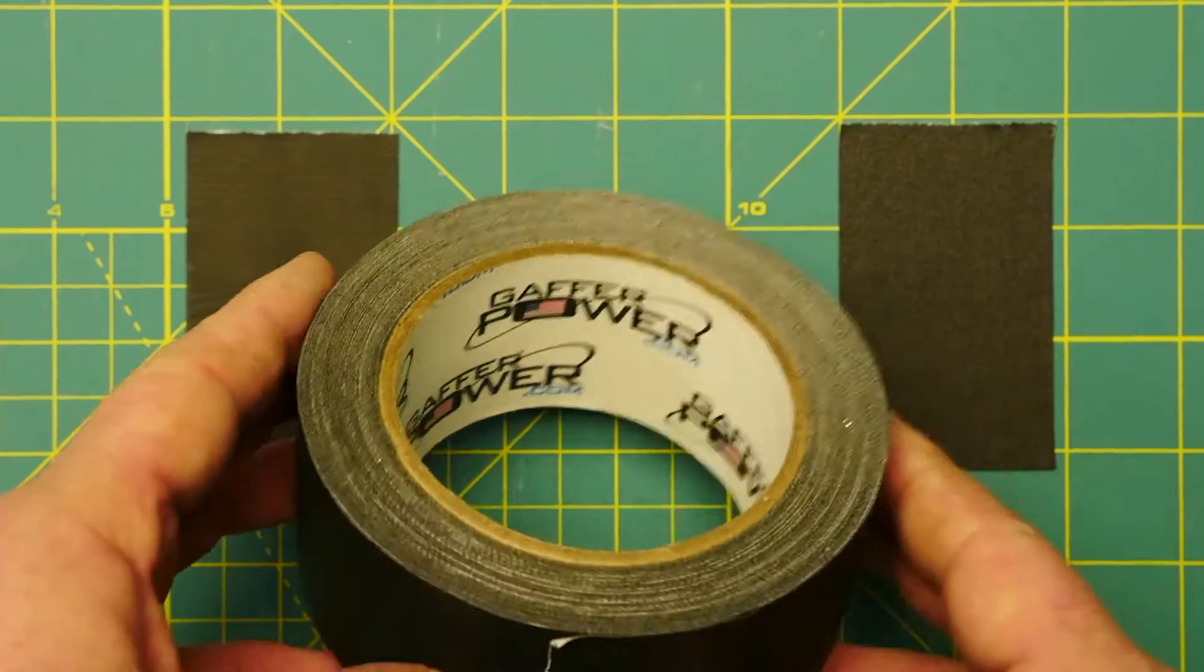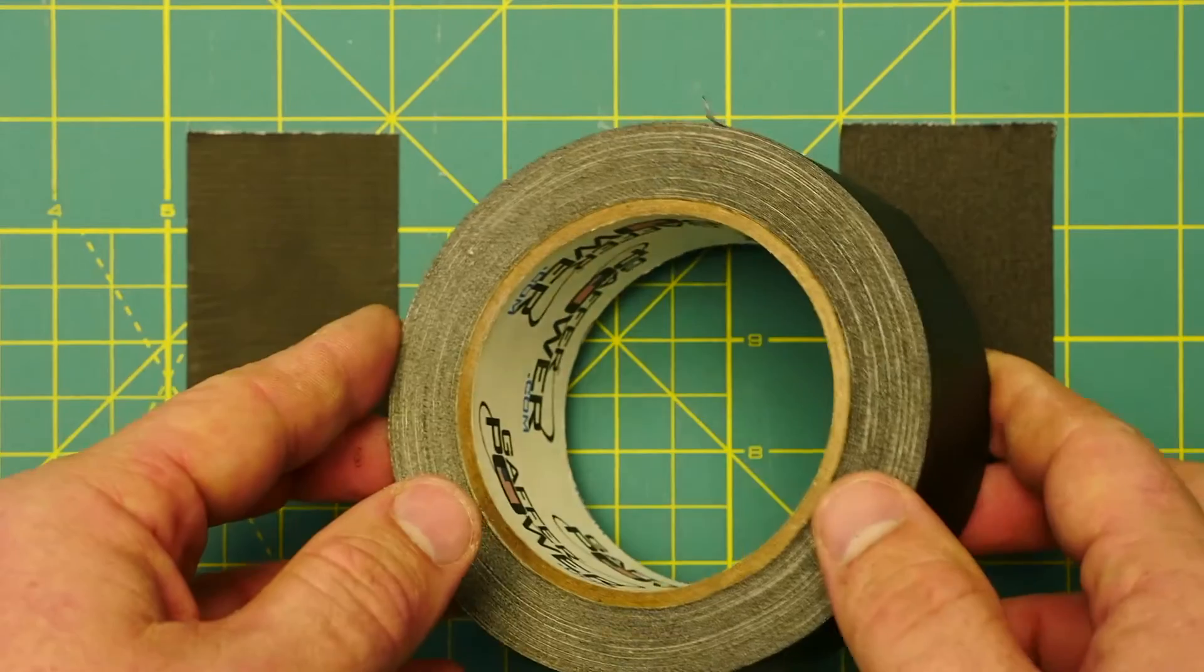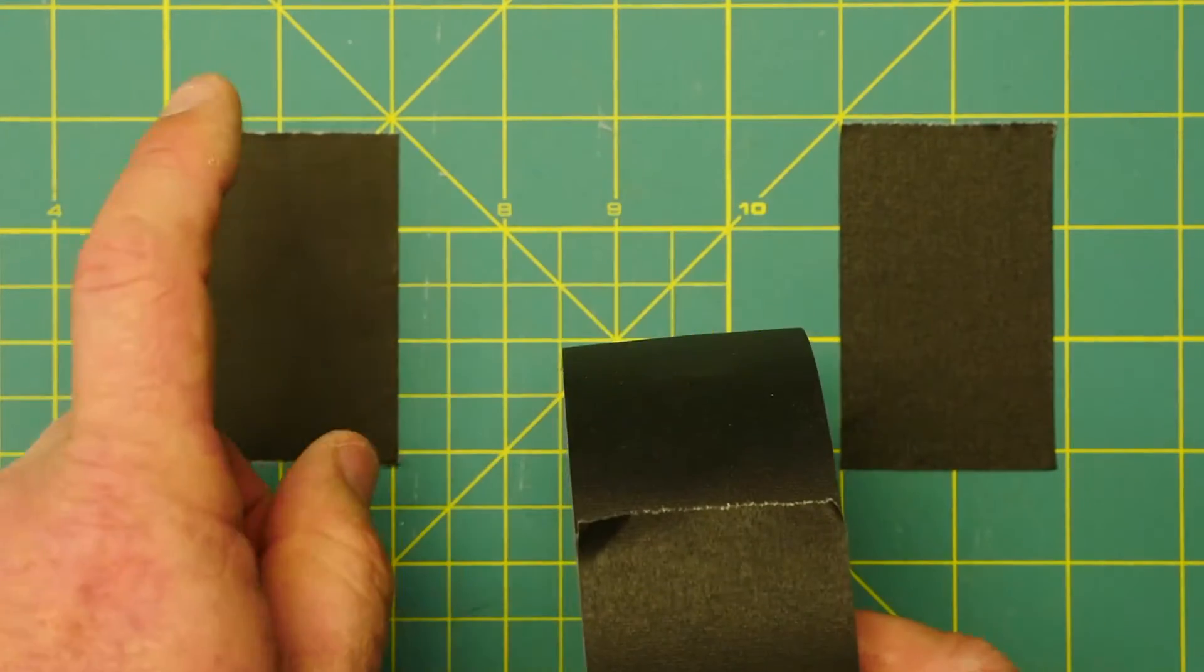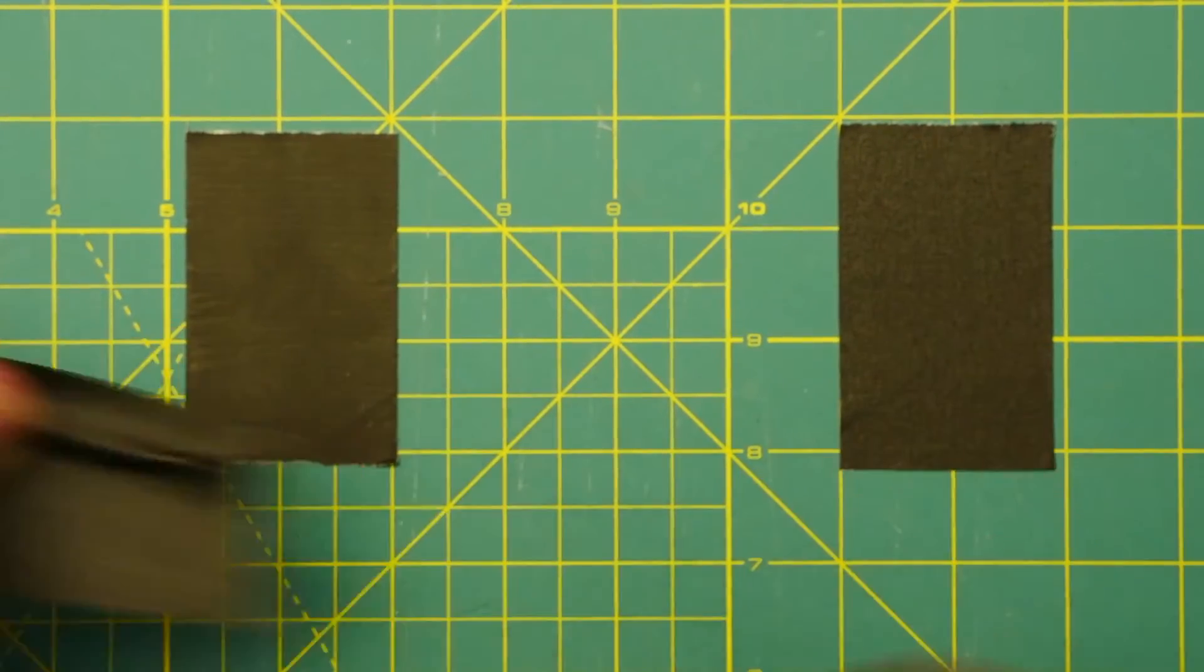For the last week this is what I've been using. It's called Gaffer Power. At first glance you can see it doesn't look like that at all. It looks just like this. I'll tear off a piece and lay it down here as well.